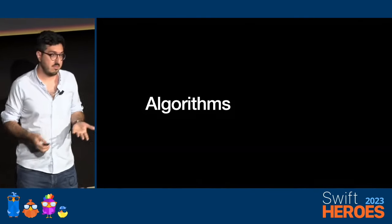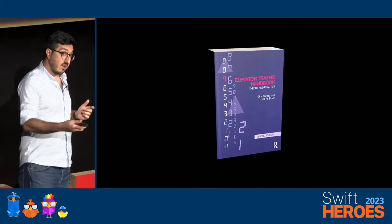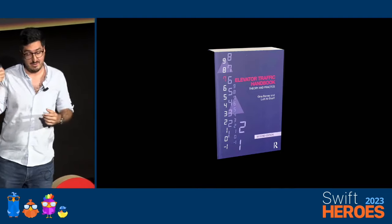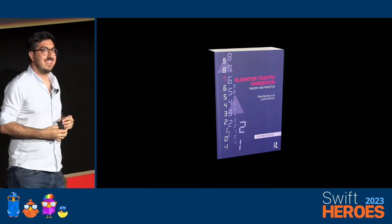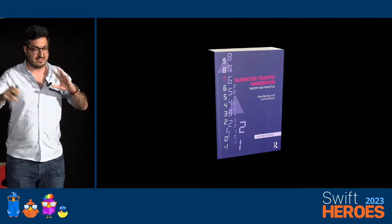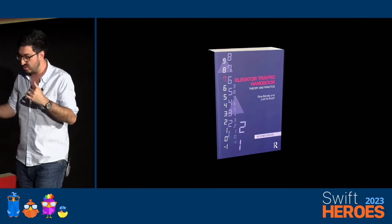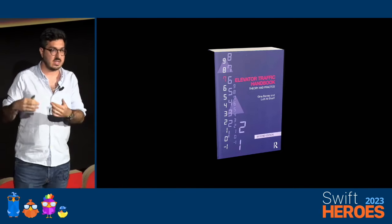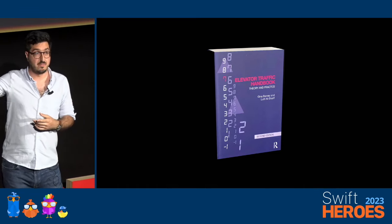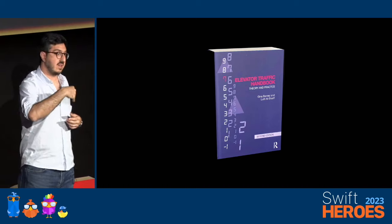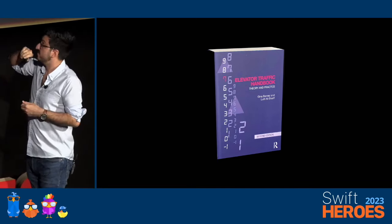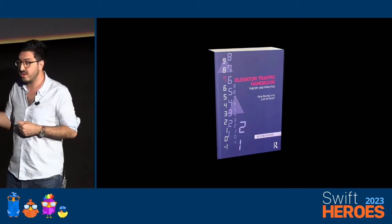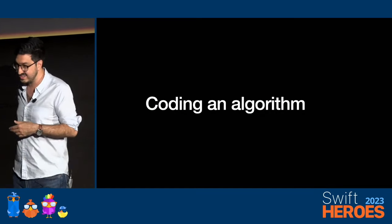That's a lot of what we're going to be talking about today — these algorithms. Algorithms are what make the elevator run, and they're what I'm really interested in. If you're also interested, this is the book for you: the Elevator Traffic Handbook. It's a real book, I read it. It's got detailed graphs, Poisson distributions, and equations — understanding the concepts in this book is how you'd design a building and know how many elevators you need. We're going to be talking about a lot of these concepts, but through a Swifty lens, because this is Swift Heroes.